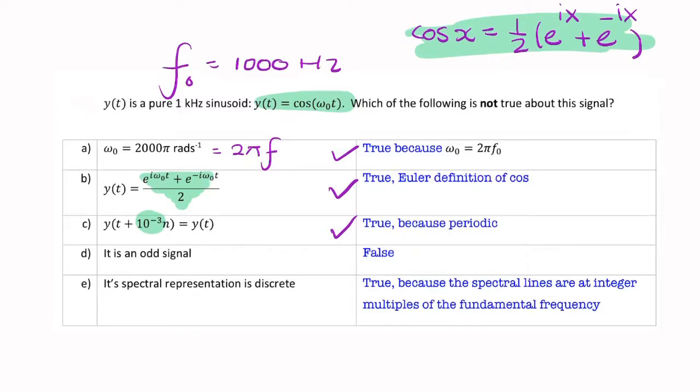Next, it's an odd signal. So, is cosine odd? Let's remind ourselves, what does a cosine signal look like?